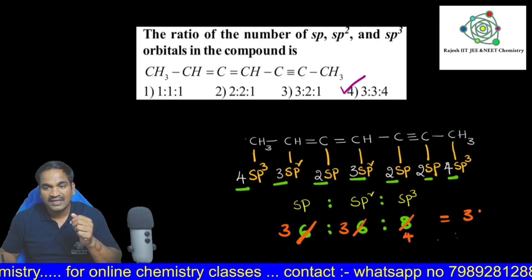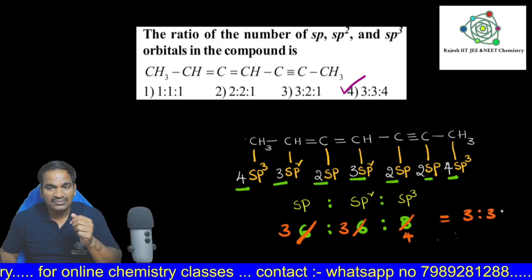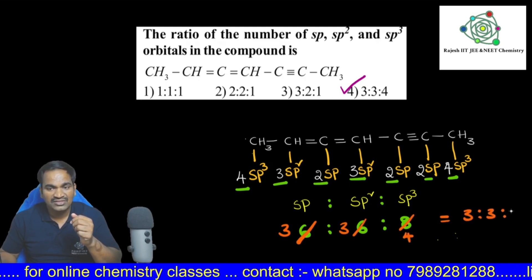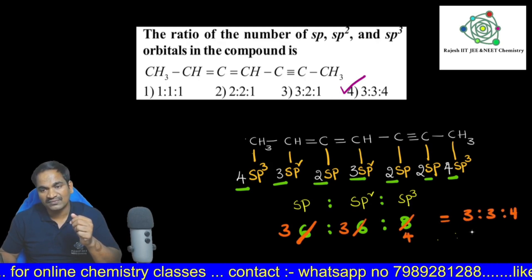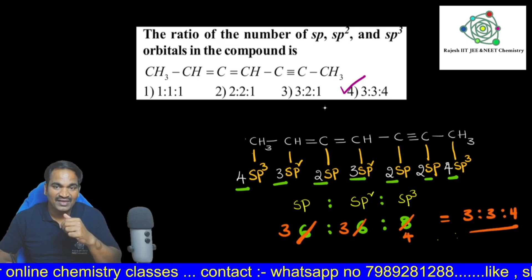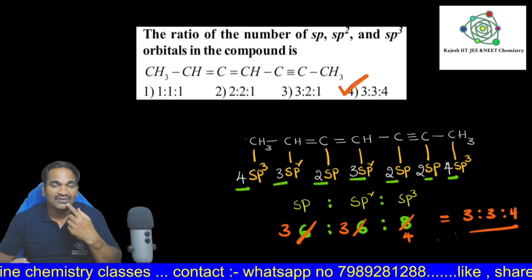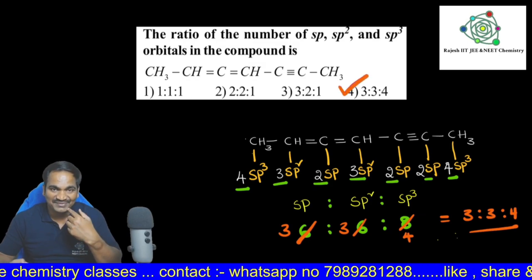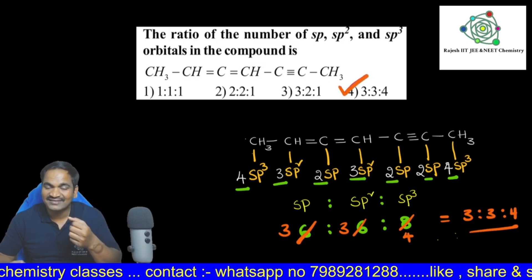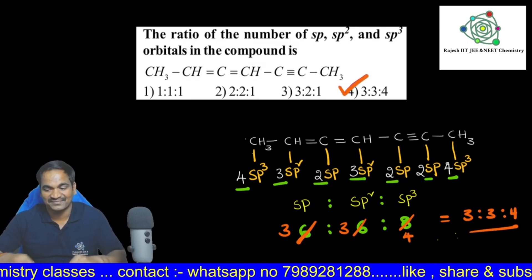So the ratio is 3 is to 2 is to 4 — that's our ratio answer for this question, the fourth option. Have you got it? Thanks for watching, bye bye.